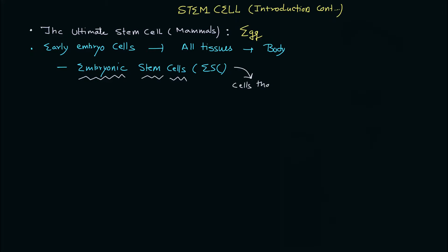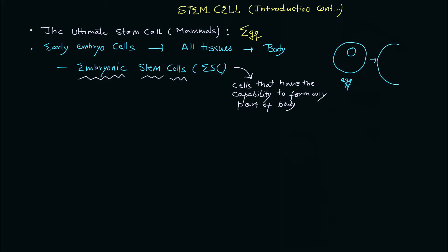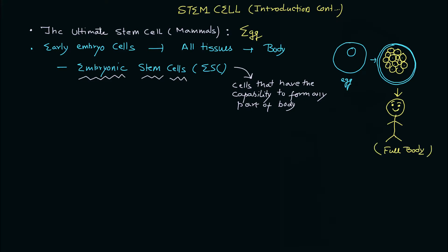If we define embryonic stem cells, or ESCs, these are the cells of the early embryo that have the ability to form any part of the body — which is fascinating, because these cells can give rise to any type of tissue. Diagrammatically, I'm trying to show you: this is the egg, and after fertilization you can see the formation of these early embryonic stem cells, which have the ability to construct the entire body. This schematic represents the complete process of human body development.